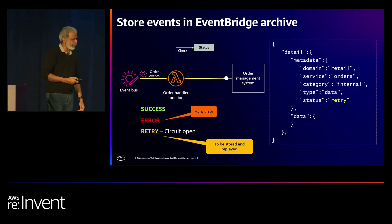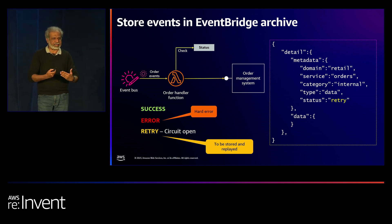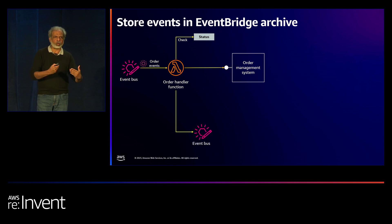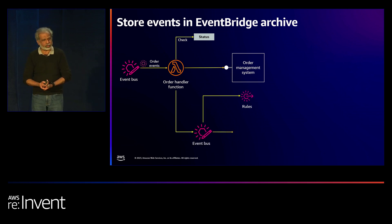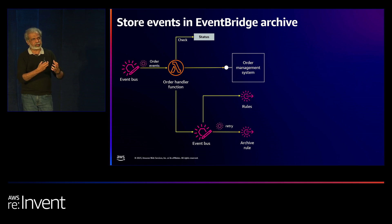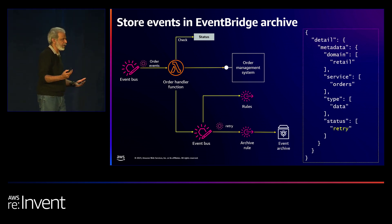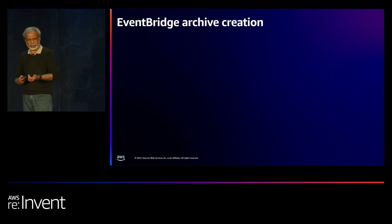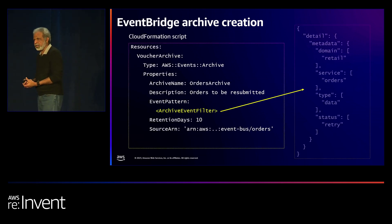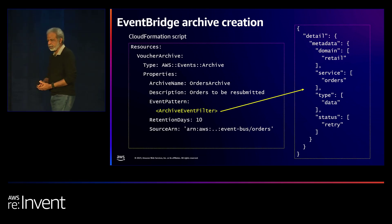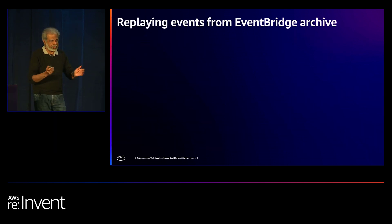Archive creation is simple — a bunch of CloudFormation scripts with a filter pattern. That's how it's set up. Replaying events from archive: you have events collected; when your system is back up, you have a logic handler that knows to replay from a particular archive, specifying the time frame — from when the system went down to when it came back.